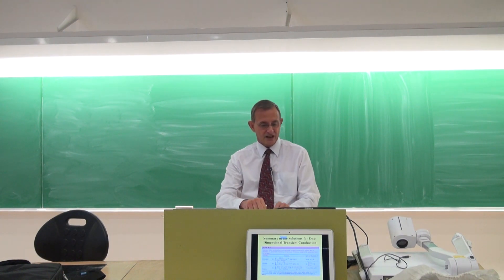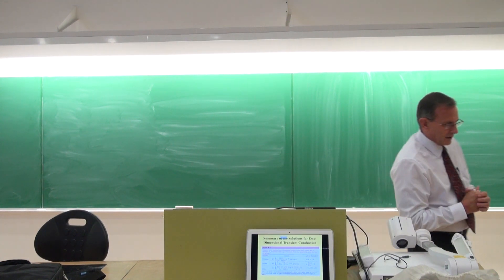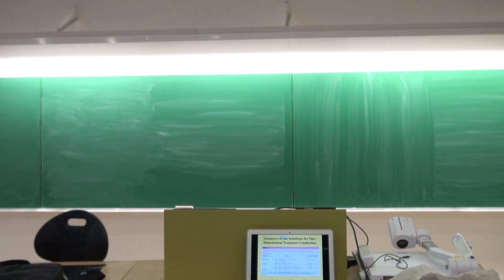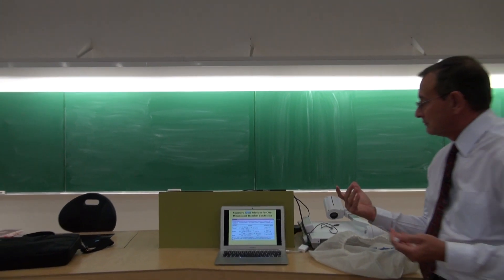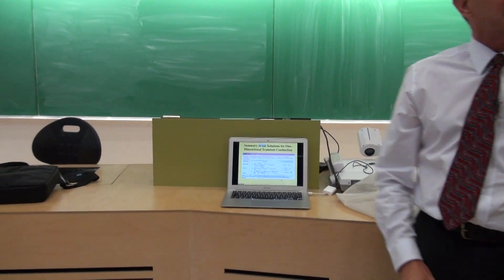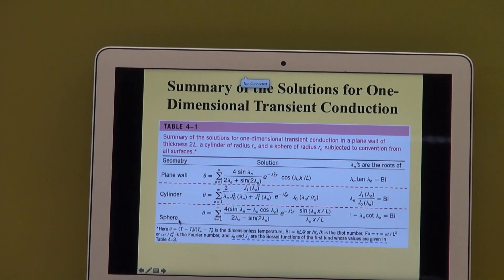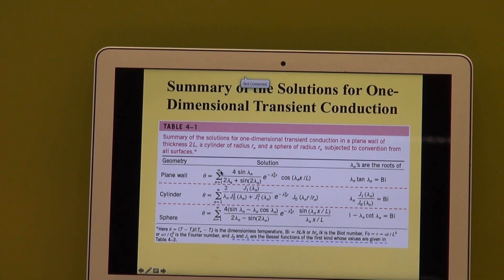and spheres with spatial effects. In that lecture, we've looked at how an analytical solution can be obtained for a plane wall, and the results are summarized in table 4.1 in your textbook. Table 4.1 gives you the three different types of geometries — the plane wall, the cylinder, and the sphere. It gives you the solution as well as the roots of lambda. Take note, in the equation it says from n equal to 1 to infinite, which means you have to go and do the calculation for 1, 2, 3, etc. In the old days,